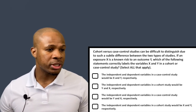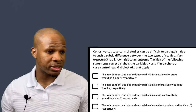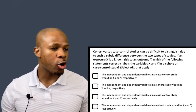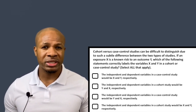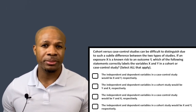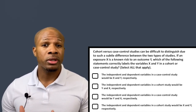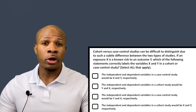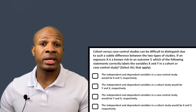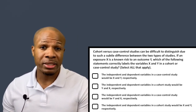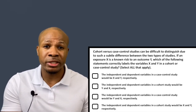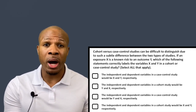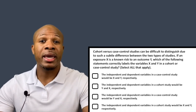Question number two: cohort versus case-control studies can be difficult to distinguish due to their subtle differences. If an exposure X is a known risk to an outcome Y, which of the following correctly labels the variables X and Y in a cohort or case-control study — select all that apply. In a case-control study, you control the cases, and 'case' is another word for outcome, which is variable Y. X is the exposure, Y is the outcome. For example, smoking causes cancer: smoking is X, cancer is Y.